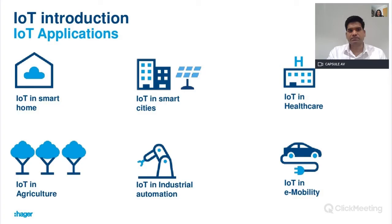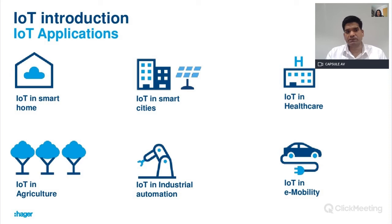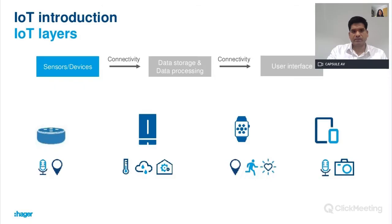Let's see what are the applications of IoT. Every application needs a customized IoT system based on the customer needs and challenges they are facing in day-to-day life. Here are a few examples of IoT applications where development is going at a very rapid pace. In the next presentations, we will see IoT on smart home more deeply.